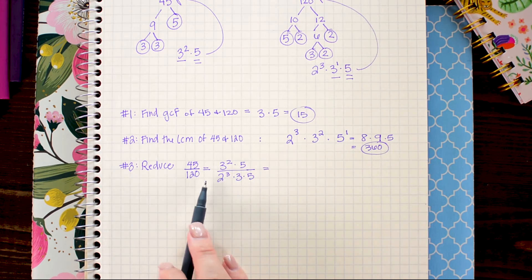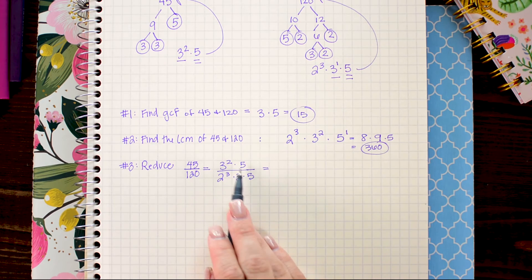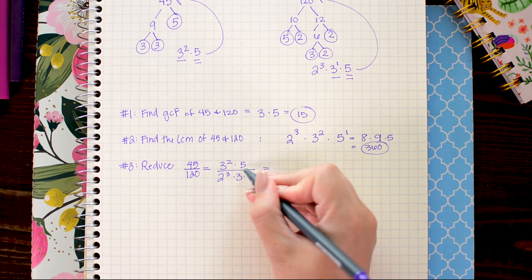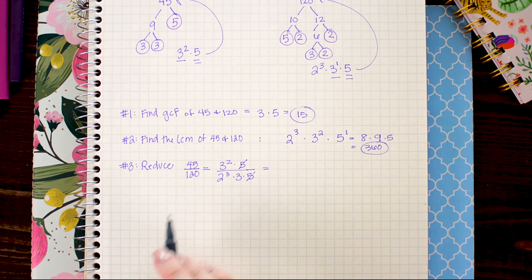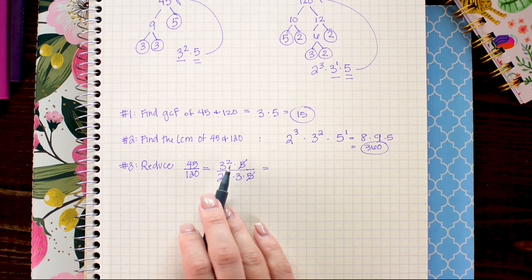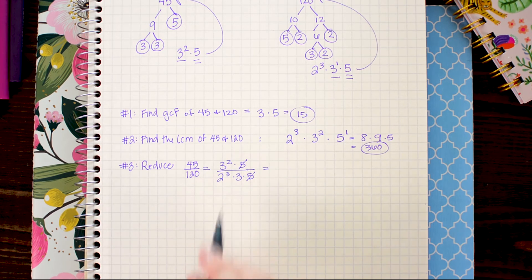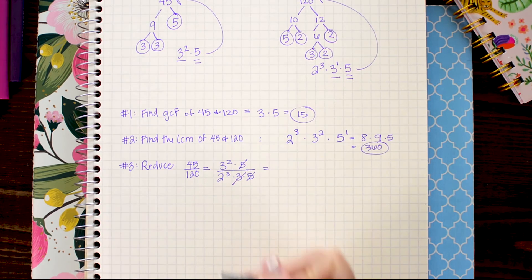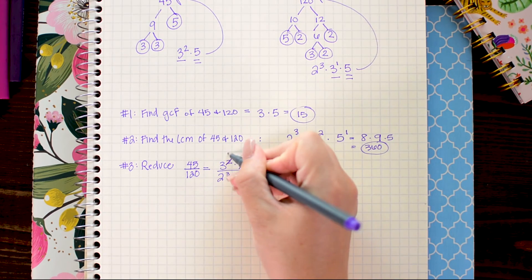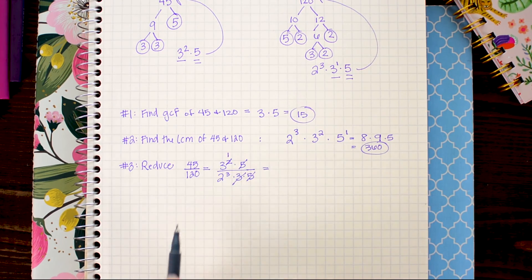So looking here I have a 5 on top and 5 on bottom so those cancel out. And I have 2 threes on top and 1 three on bottom so I can get rid of 1 of these 3's with 1 on top leaving behind 1 three in the numerator.